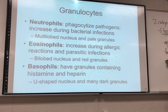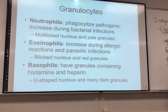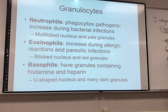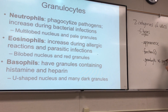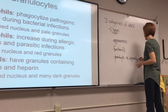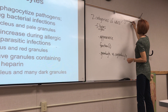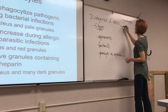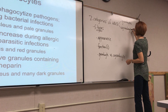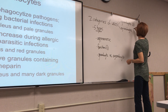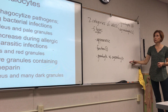You should know which category each white blood cell belongs to — whether they are a granulocyte or agranulocyte. These are the two categories. We have granulocytes and agranulocytes — three granulocytes and two agranulocytes.